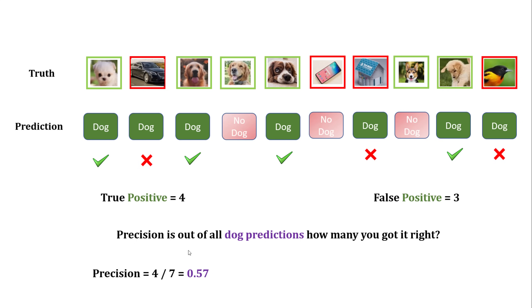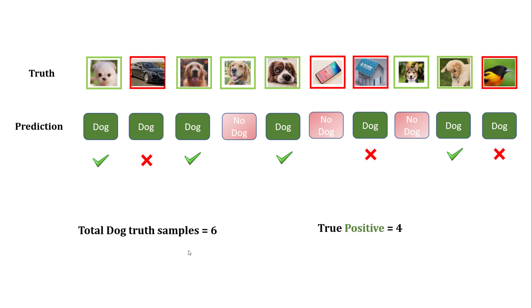So precision is four divided by seven, which is 0.57. The formula for precision is: true positive divided by true positive plus false positive.